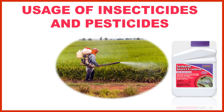Next comes the usage of pesticides and insecticides. Farmers use these to save crops from pests. These chemicals are harmful but when proper precautions are taken, they can be used safely.